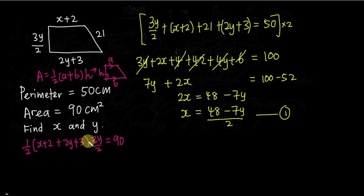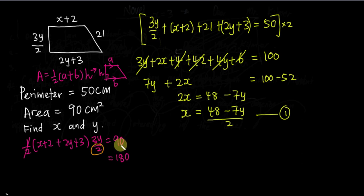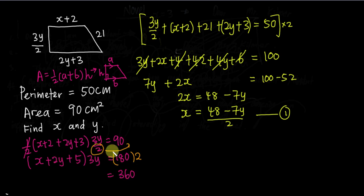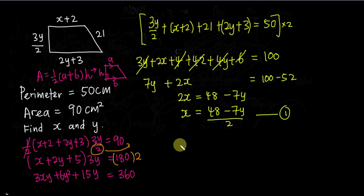I'll solve the area equation now. First, I move the half to the other side, multiplying by 2 to get 180. There's also an 'over 2' from the height, so multiplying by 2 again leaves just 3y. So we have (x + 2y + 2 + 3), which simplifies (2 + 3 = 5), multiplied by 3y. Expanding gives 3xy + 6y squared + 15y. This is the expanded form of the area equation.